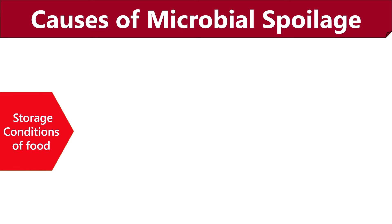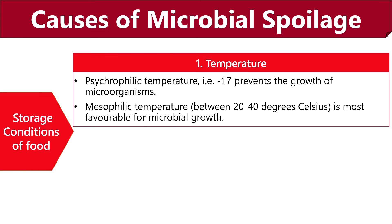Storage conditions like temperature and oxygen are the external factors influencing food spoilage. Psychrophilic temperatures, meaning minus 17 degrees Celsius, can prevent growth of microorganisms and are considered safe. But mesophilic temperatures between 20 to 40 degrees Celsius are most favorable for microbial growth. Therefore warm conditions are optimal for the growth of mesophilic and thermophilic microorganisms like Listeria, Pseudomonas, Staphylococcus and Enteraceae species.